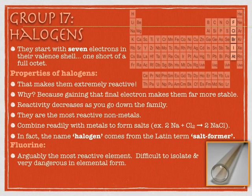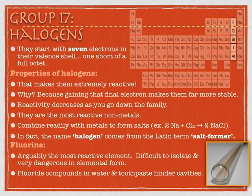Starting with the most reactive halogen: fluorine is arguably the most reactive element. Many people could argue francium would be equally reactive on the flip side, but there's very little francium on the planet. Fluorine is a tiny atom with a strong pull on new electrons, making it very difficult to isolate. In fact, the man who isolated it — Henri Moissan — ended up winning a Nobel Prize for it, beating out none other than Mendeleev himself for the 1905 Nobel Prize. They both died the next year, so Mendeleev never won a Nobel Prize because he was beaten out by the man who isolated fluorine.